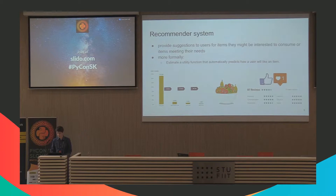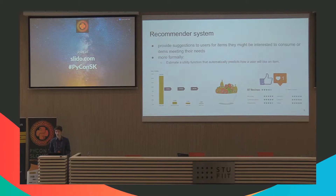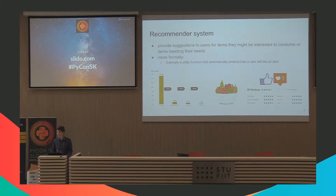Recommendation systems can help us. They provide suggestions to users for items that might be interesting to consume, or items meeting their needs and preferences. More formally, it's a machine learning model that automatically tries to predict how a user will like a particular item. The data we use includes how customers browse your website, their ratings, likes, or reviews, and based on that we can compute similarities between users or between items.